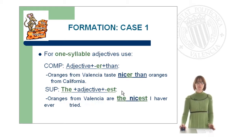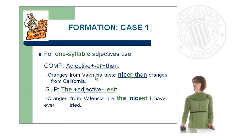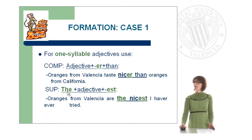Now we are going to have a look at the formation of case one in more detail. For one-syllable adjectives, the comparative is formed using the adjective plus -er plus 'than'. For example: 'Oranges from Valencia taste nicer than oranges from California.' To form the superlative, we use 'the' plus the adjective plus -est. For example: 'Oranges from Valencia are the nicest I have ever tried.'